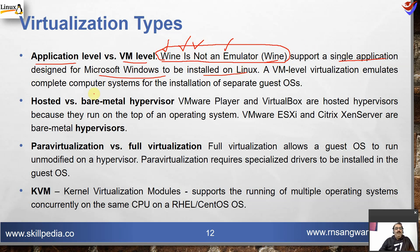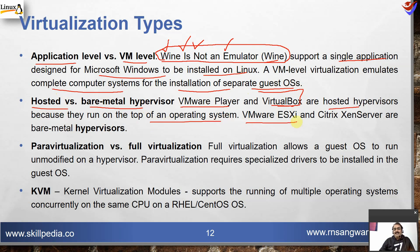VM-level virtualization emulates a complete computer system for the installation of separate guest operating systems. Then there is hosted versus bare-metal hypervisor. VMware Player and Oracle VirtualBox are hosted hypervisors because they run on top of an existing operating system. VMware ESXi and Citrix XenServer are bare-metal hypervisors — they are installed directly on physical machines with only the bare minimum operating system required for the hypervisor.